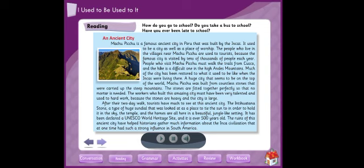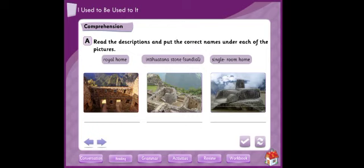Now we have an exercise at your page 47 in your student book. Exercise A: Read the descriptions and put the correct names under each of the pictures. There are three descriptions: royal home, Inti Watana stone or sundial, and single room home.